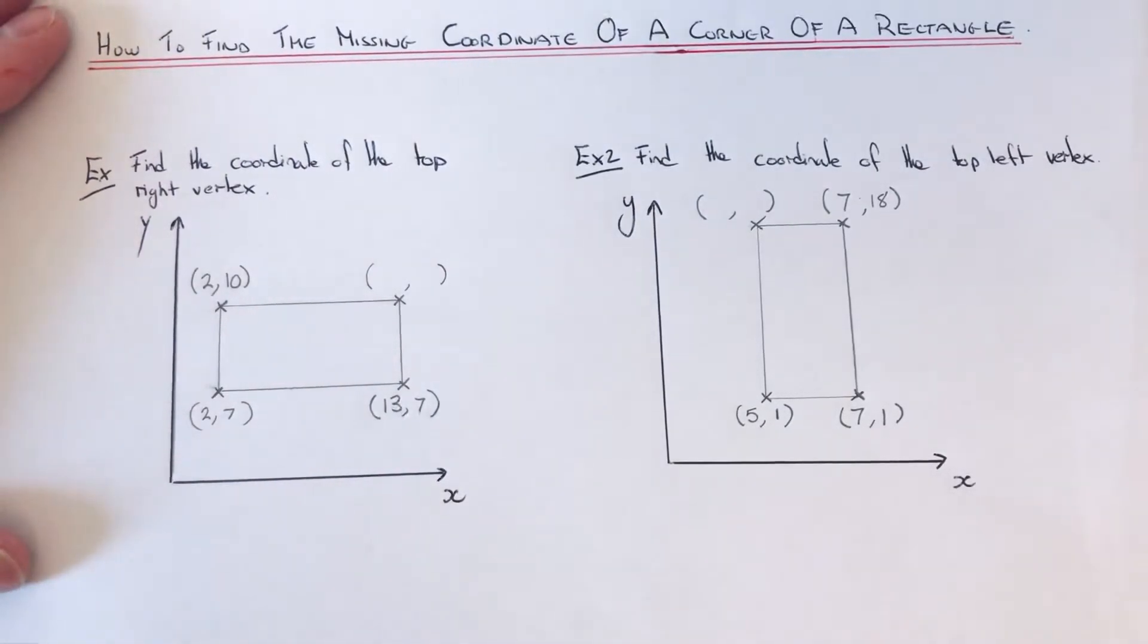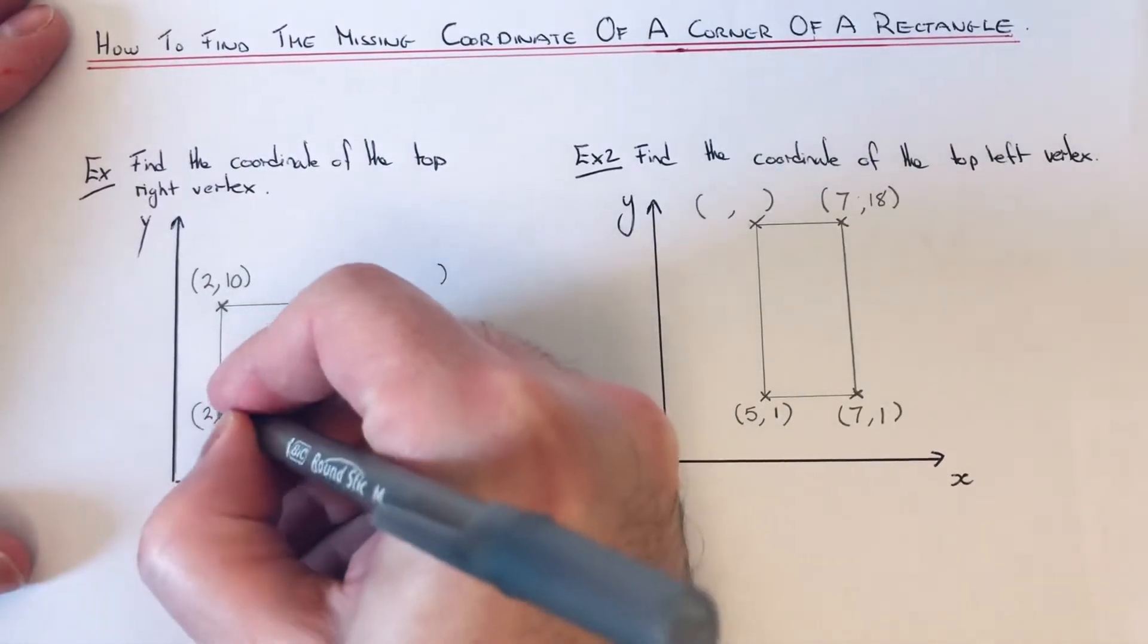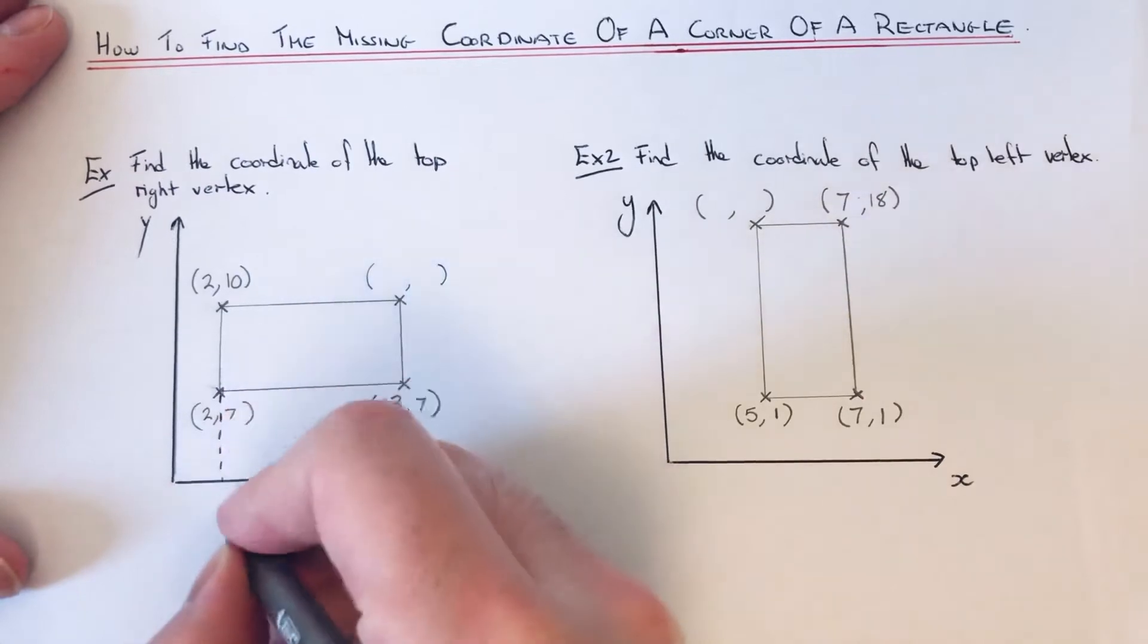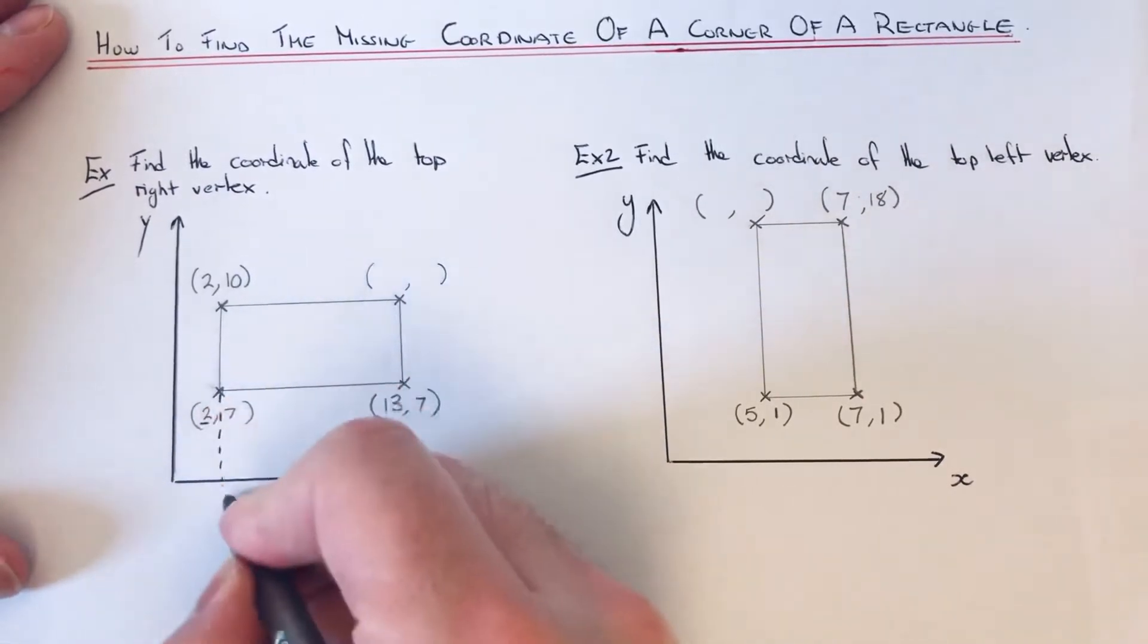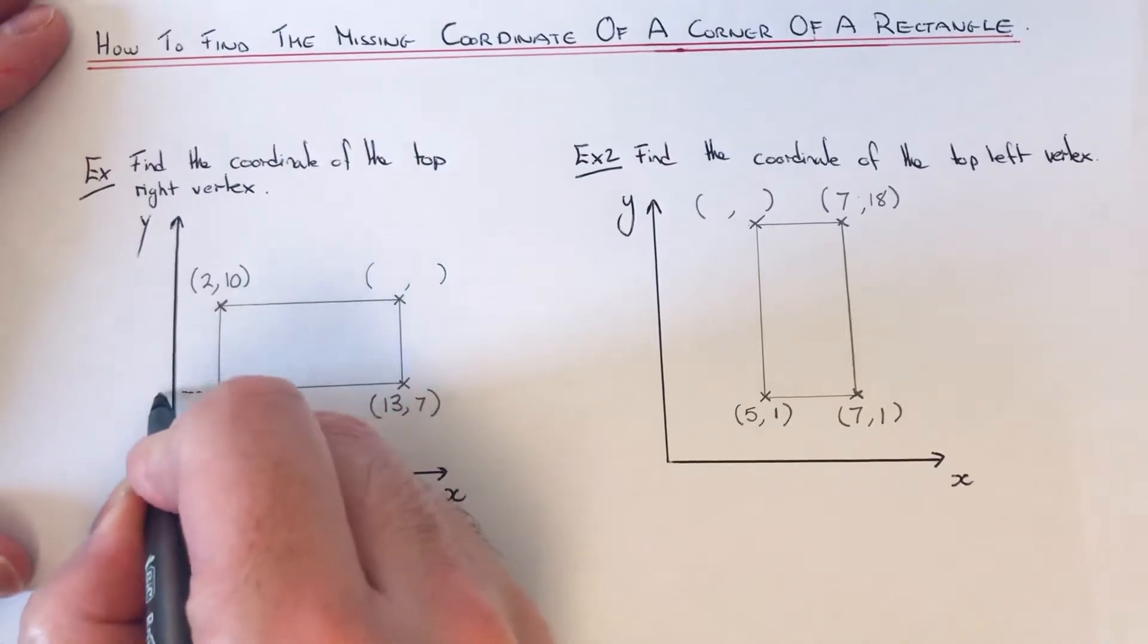Start with this bottom left hand corner. If we do a line going down, the number here would be two. And if we do a line going across, the number here would be seven.